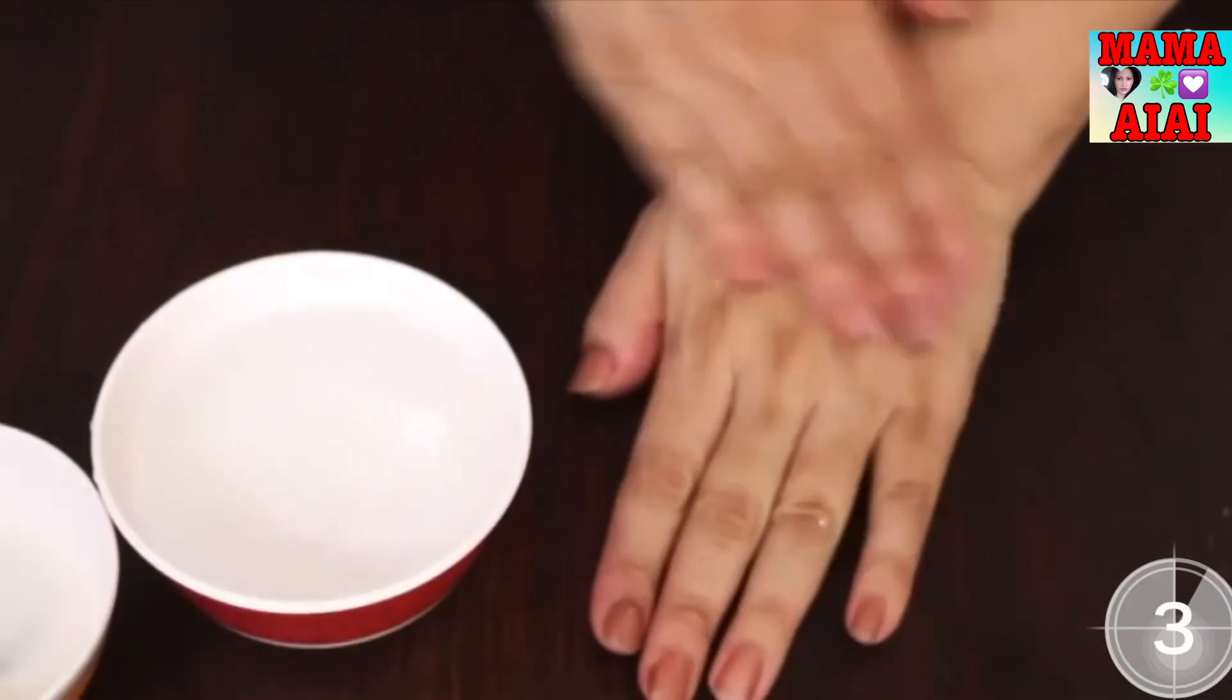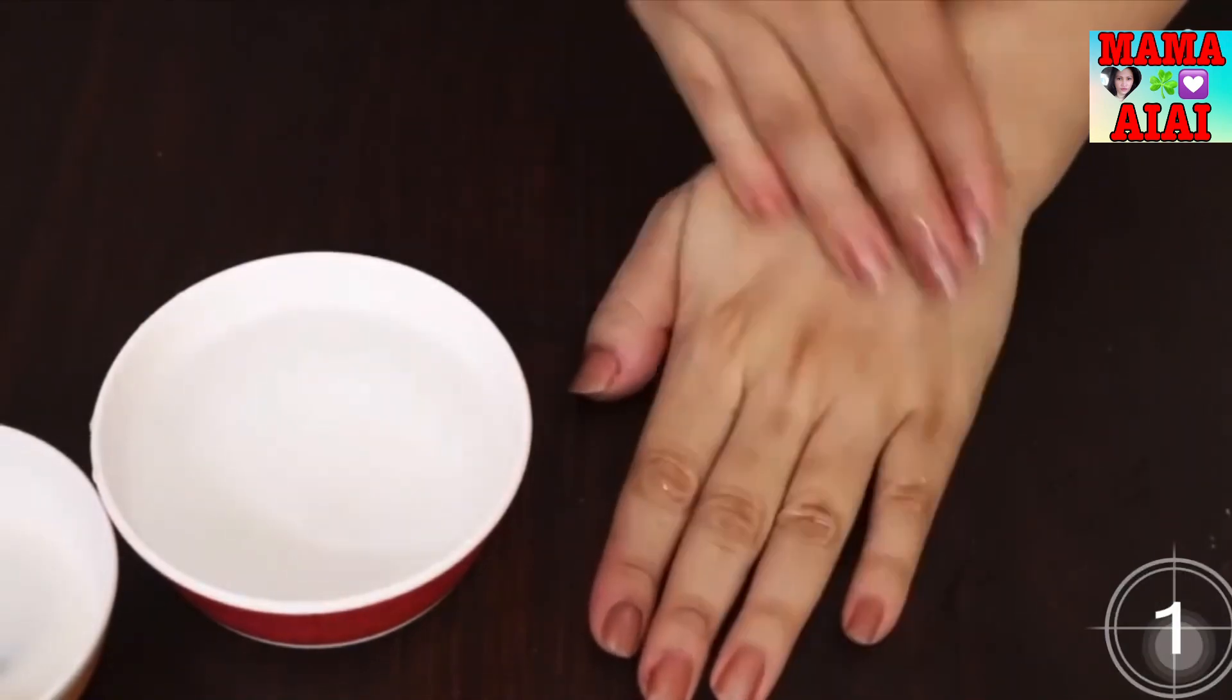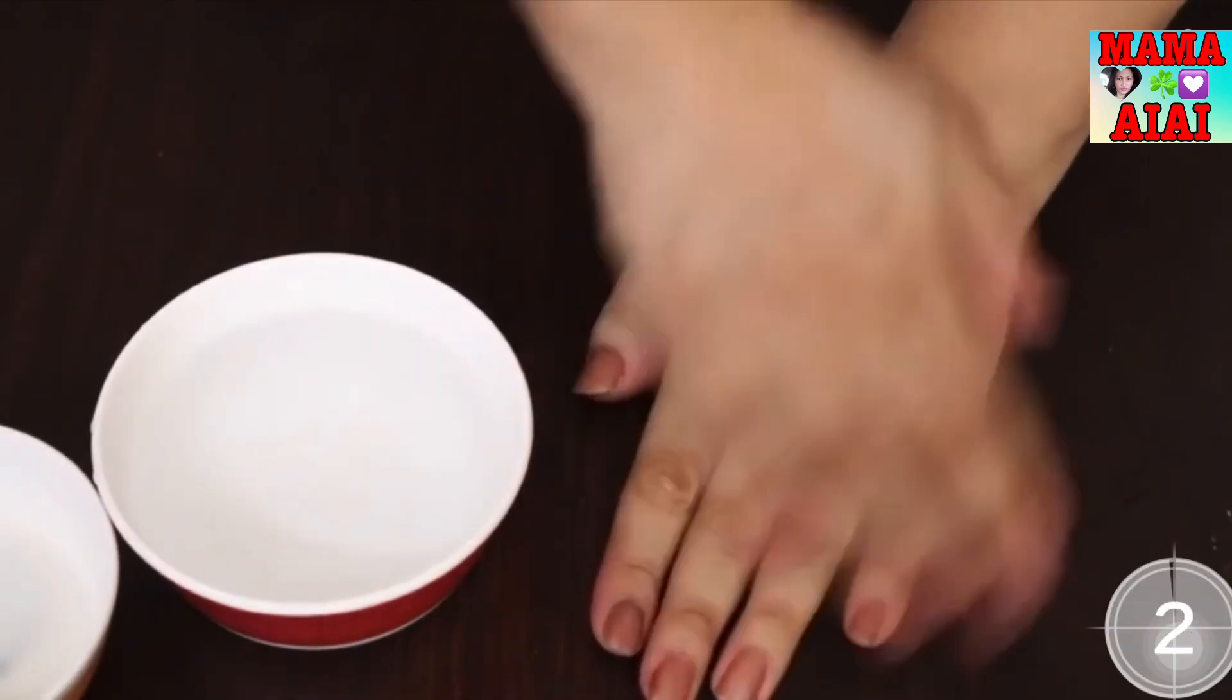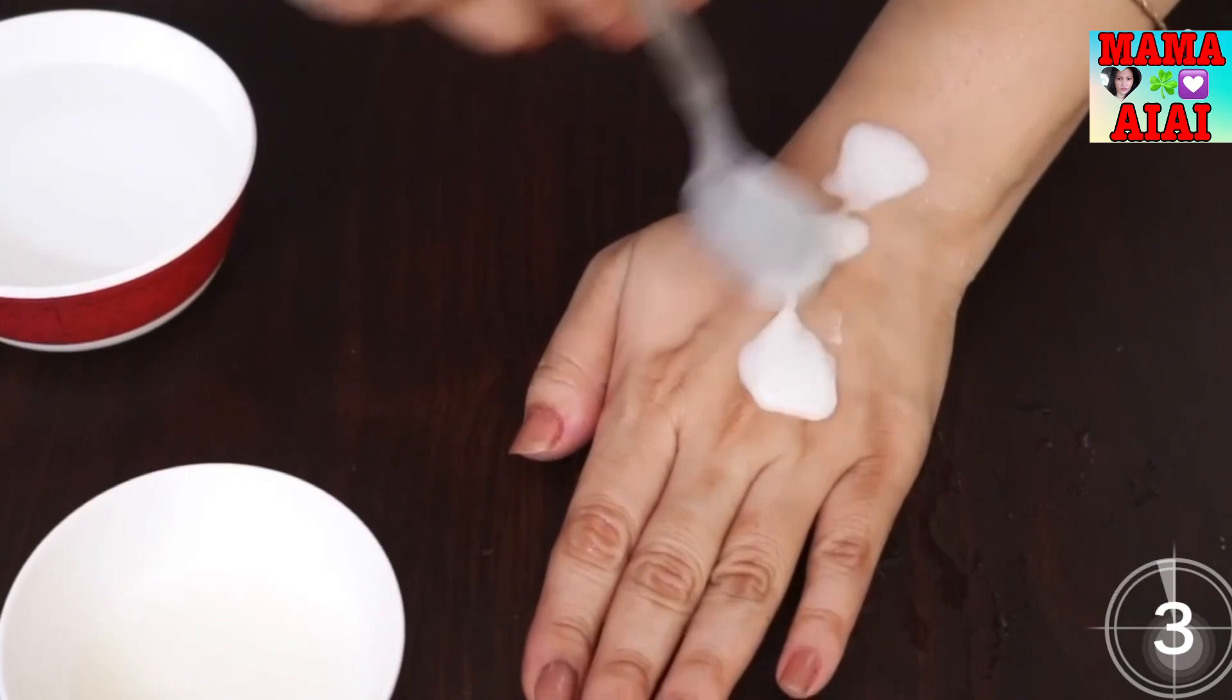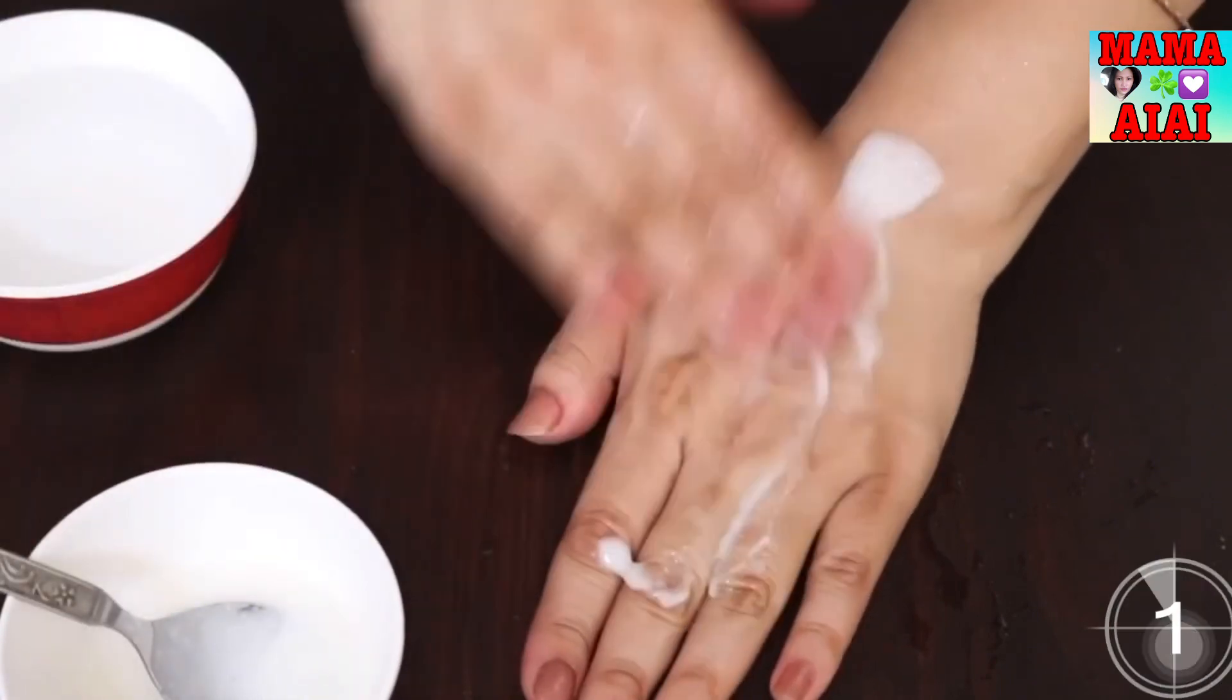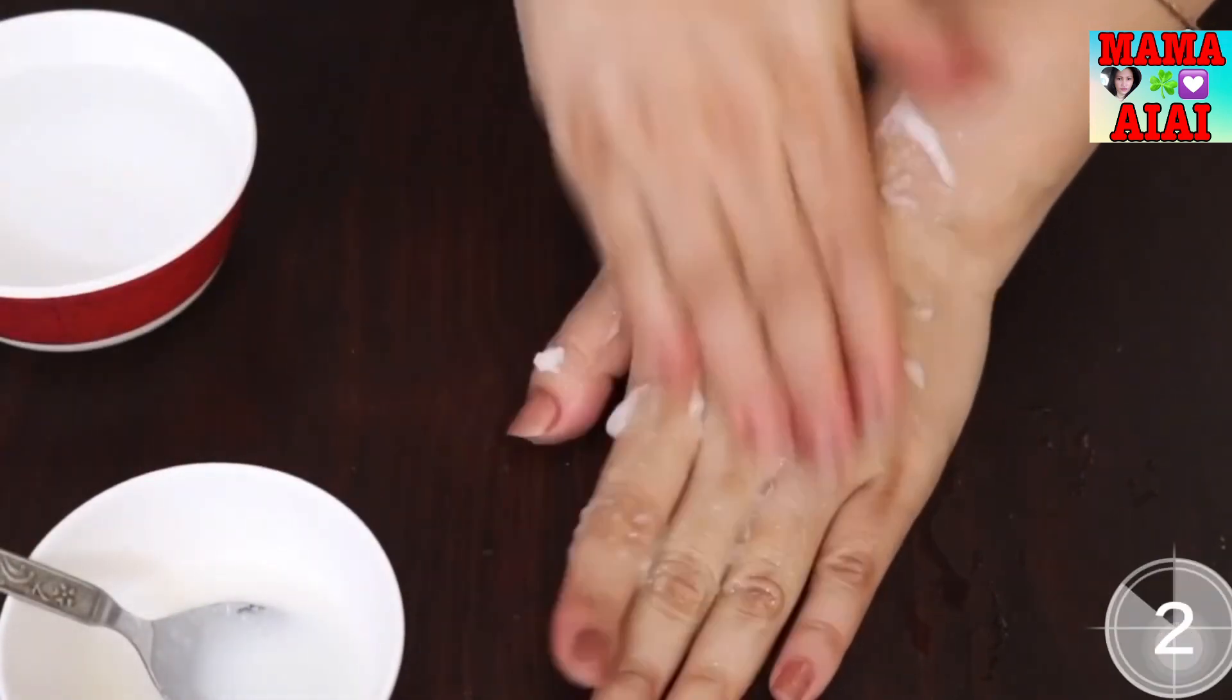Before applying the scrub make sure to wash your hands with warm water. Then apply the paste and gently rub in a circular motion for 2 minutes.